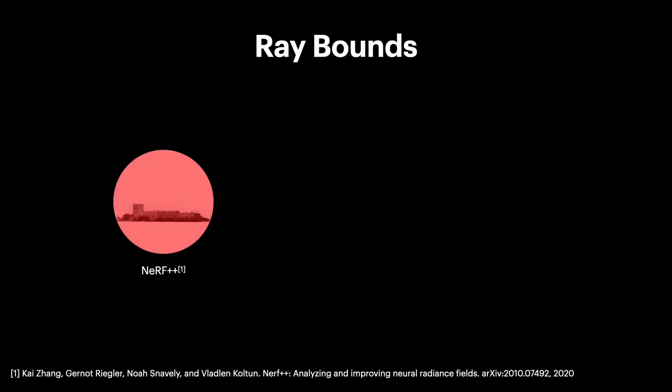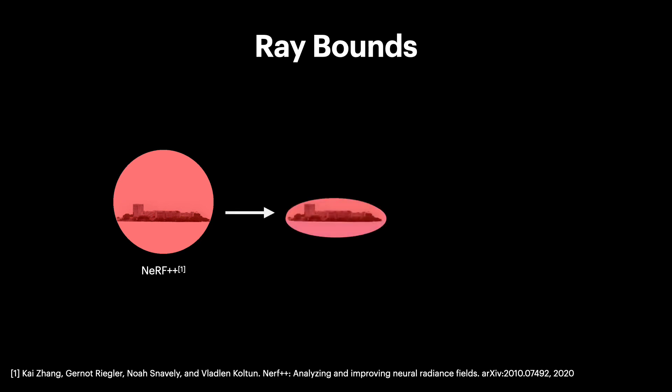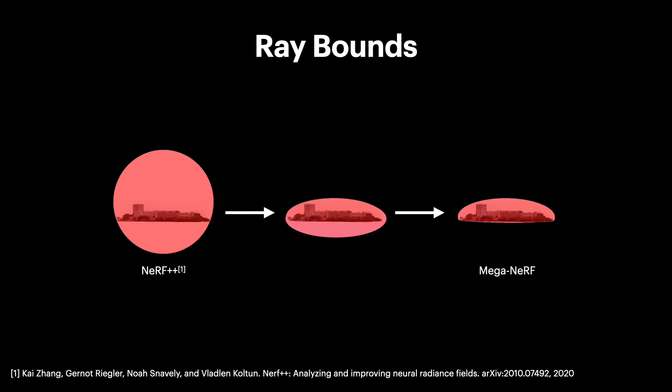To further improve training, we use a separate MegaNerf model to render the background, using a similar outer volume formulation as in NeRF++, but improve upon its unit sphere partitioning by instead using an ellipsoid that more tightly encloses the foreground. We also use camera altitude measurements to further increase sampling efficiency by terminating rays near ground level.